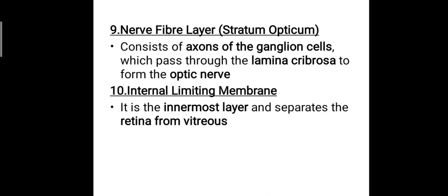The ninth layer is the nerve fiber layer, or stratum opticum, consisting of the axons of the ganglion cells, which pass through the lamina cribrosa to form the optic nerve. The tenth layer is the internal limiting membrane — the innermost layer — which separates the retina from the vitreous chamber.